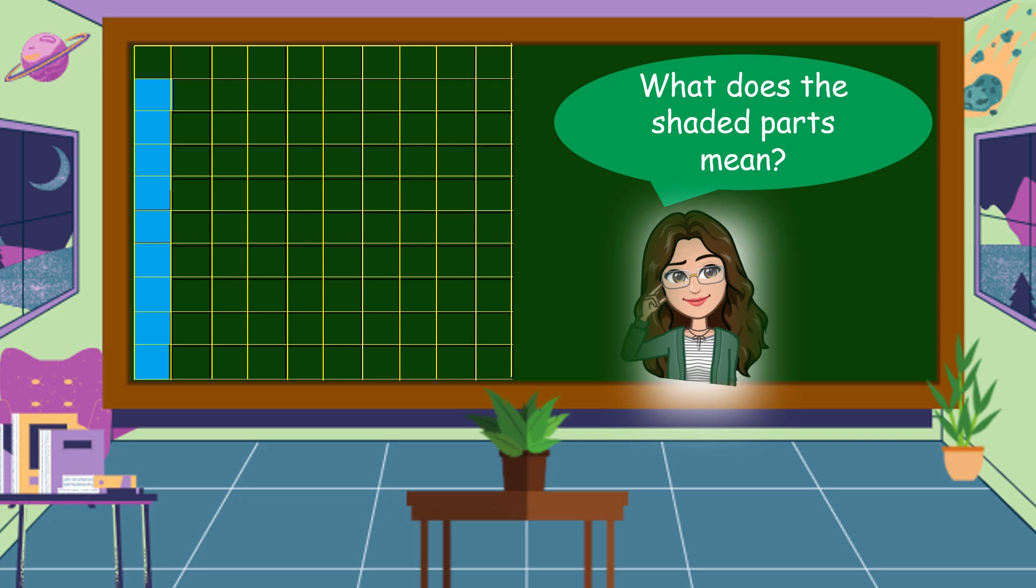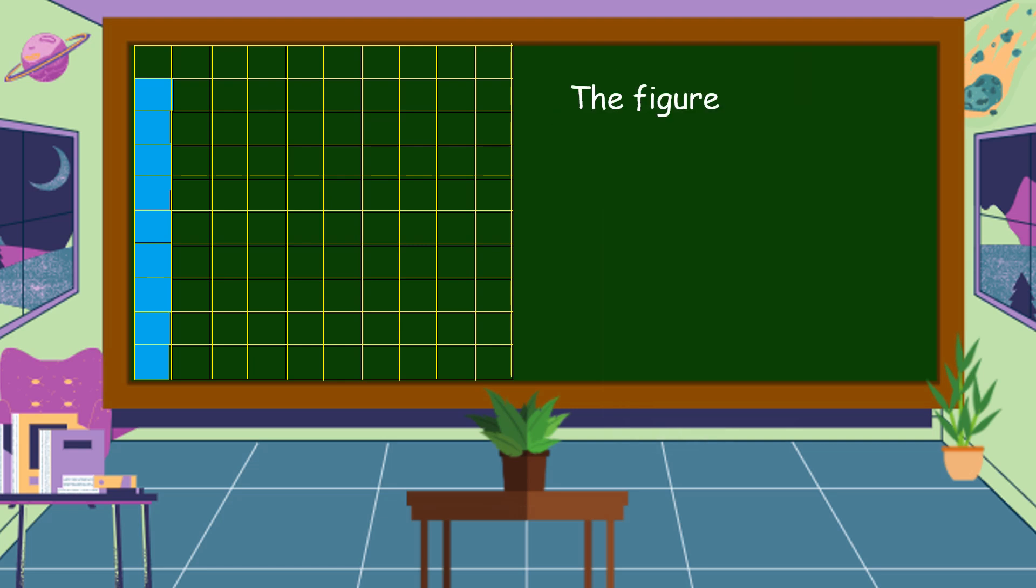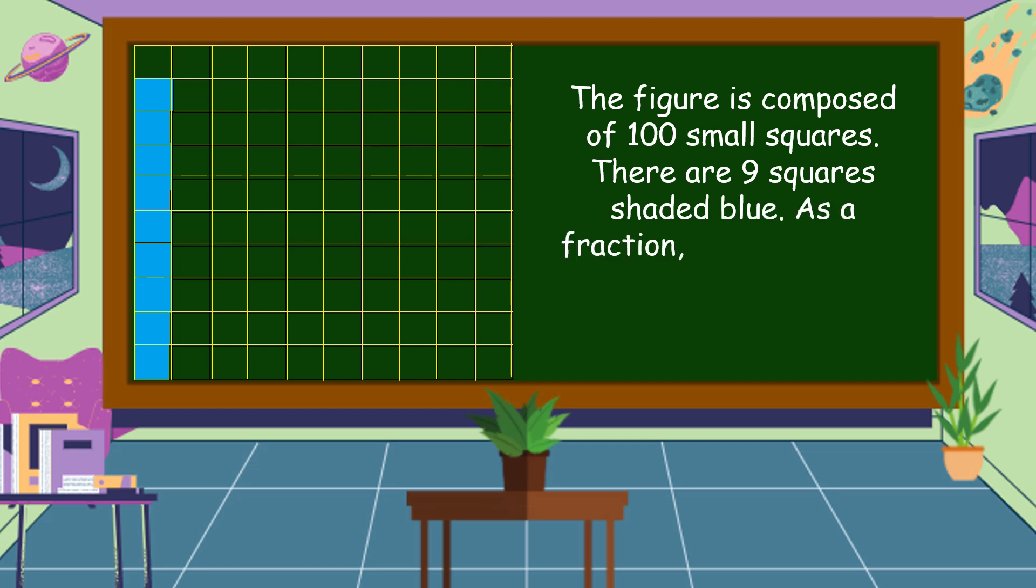What does the shaded parts mean? The figure is composed of 100 small squares. There are 9 squares shaded blue. As a fraction, the blue region is 9 over 100 or 9 per 100.